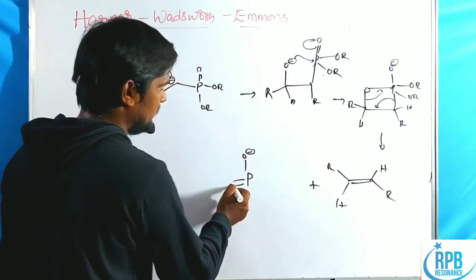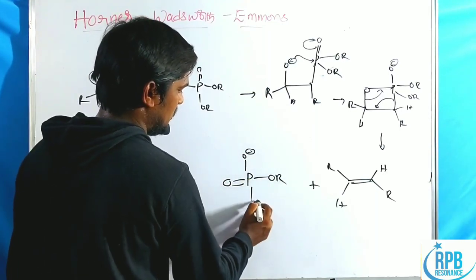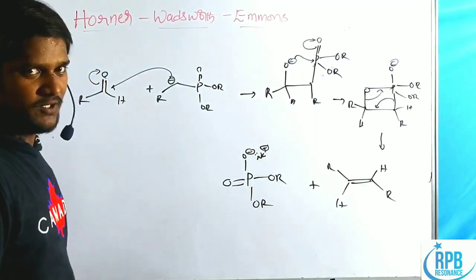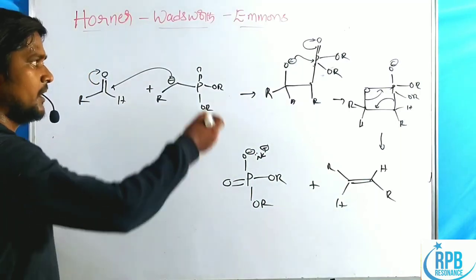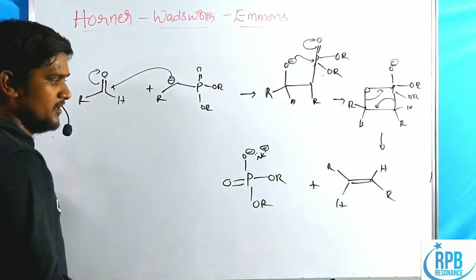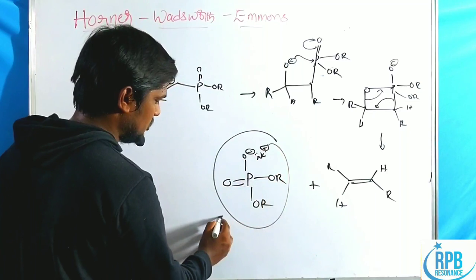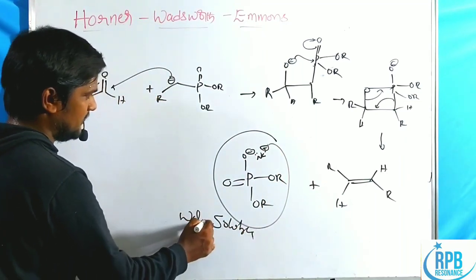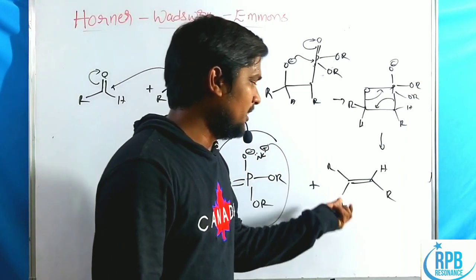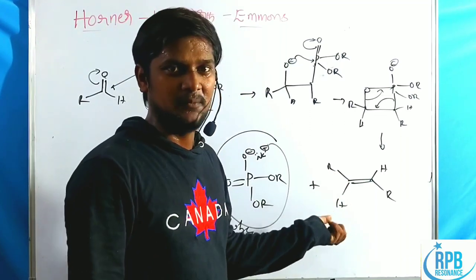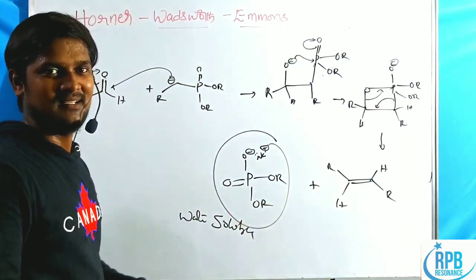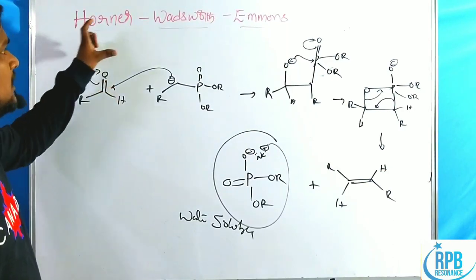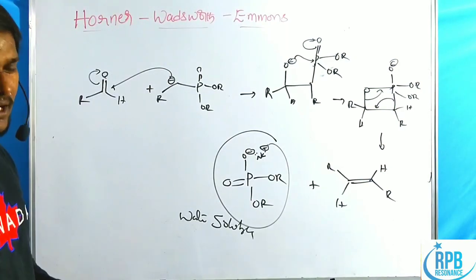We used salts like sodium or potassium salts as the base. The resulting phosphate salt is soluble in water, and this makes separation of the alkene product very easy. This is the simple mechanism of the Horner-Wadsworth-Emmons reaction.